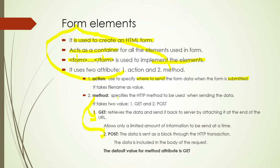GET retrieves the data and sends it back to the server, but it attaches the data at the end of the URL — that is, uniform resource locator — and then sends it to the server. Because it attaches data to the end of the URL, GET allows only a limited amount of information to be sent at a time. You know what a URL is — when you search the web, in the address bar you see https colon double slash www and so on — that is the URL.